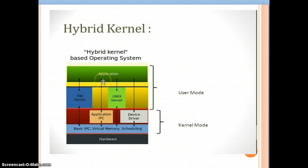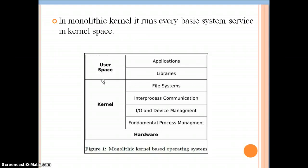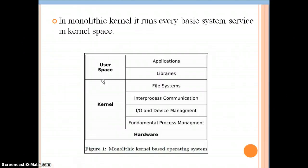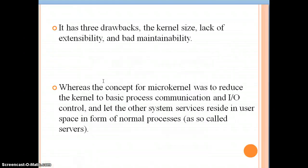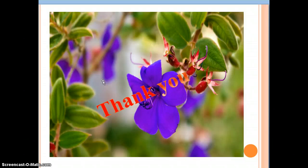The hybrid operating system is formed by the combination of the two kernels: the micro kernel and the monolithic kernel. We have seen the diagrams of the hybrid kernel and both of these kernels. We can conclude that the hybrid kernel is the combination of these two kernels, formed by combining the benefits and avoiding the drawbacks of the monolithic kernel while using the benefits of the micro kernel. Thank you.